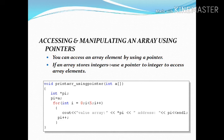You can access an array element by using a pointer if the array is stored as integer, using integer pointer: void printArrayUsingPointer(int a[]); int* pi = a; for i = 0; i < 5; i++ — cout value of array: *pi, end line, pi++.